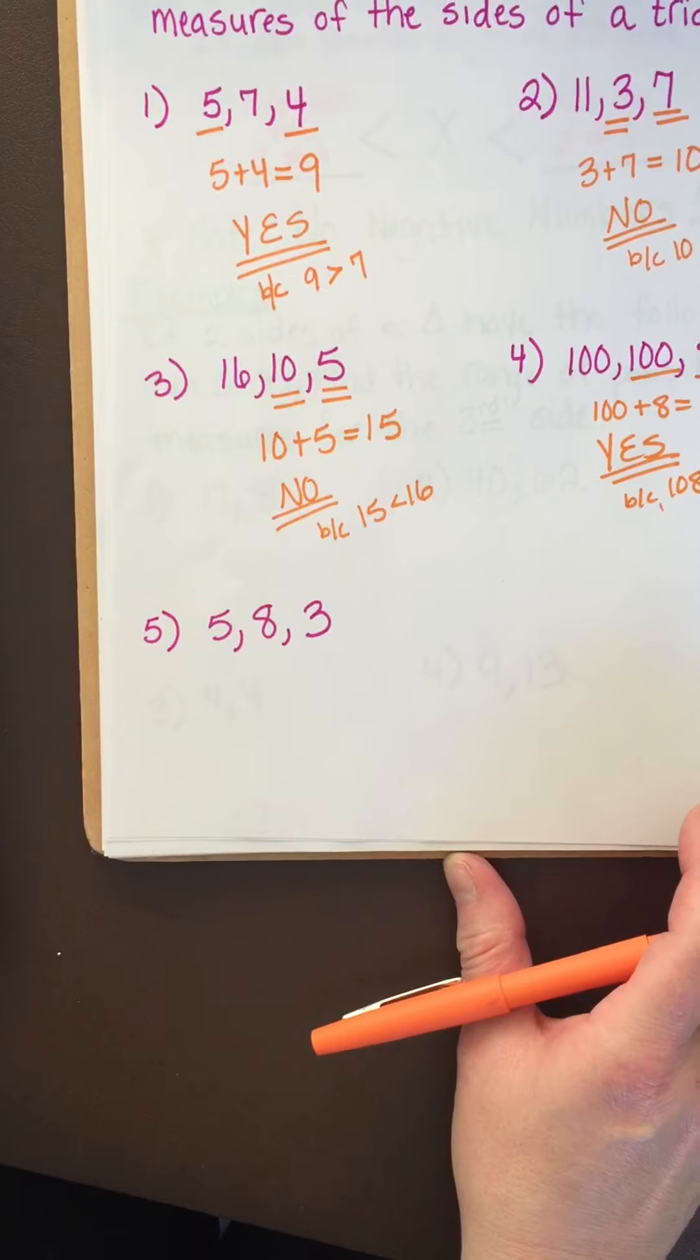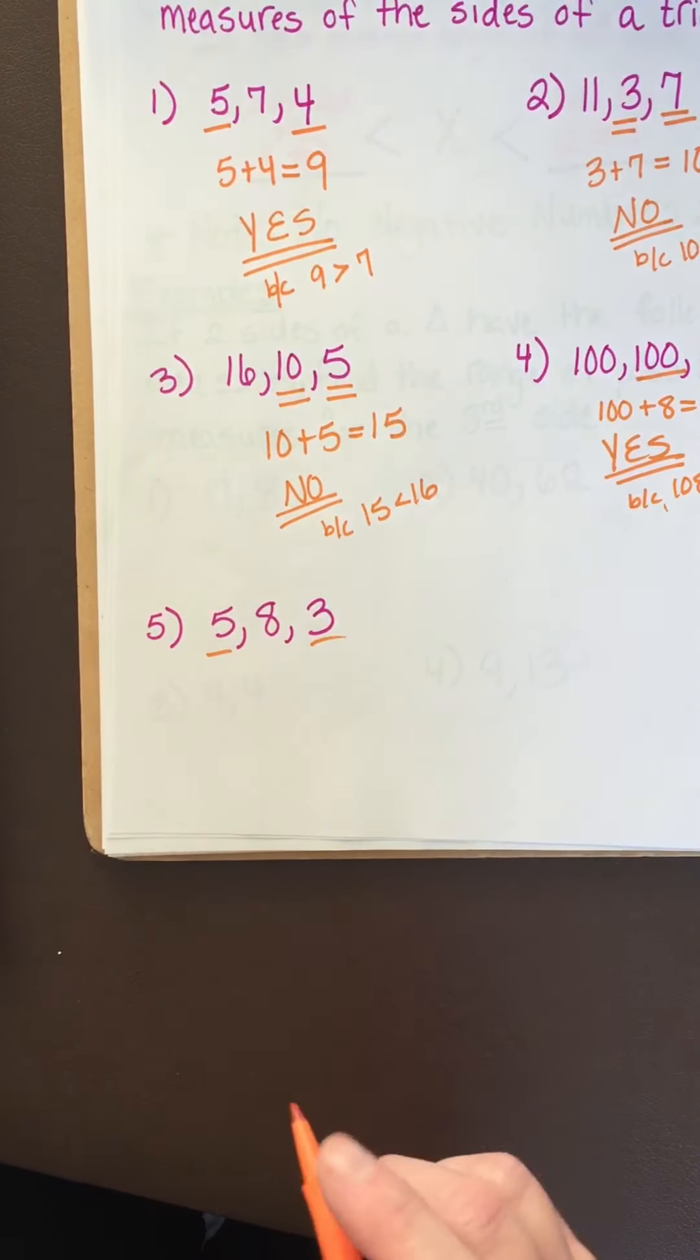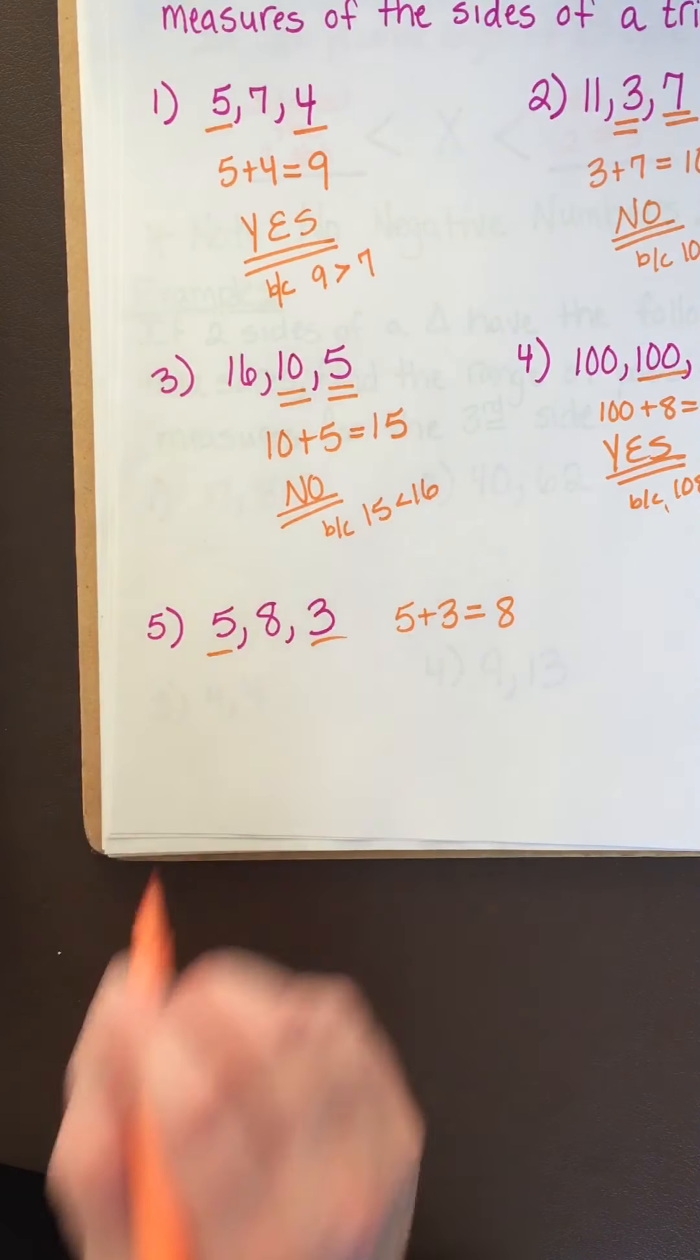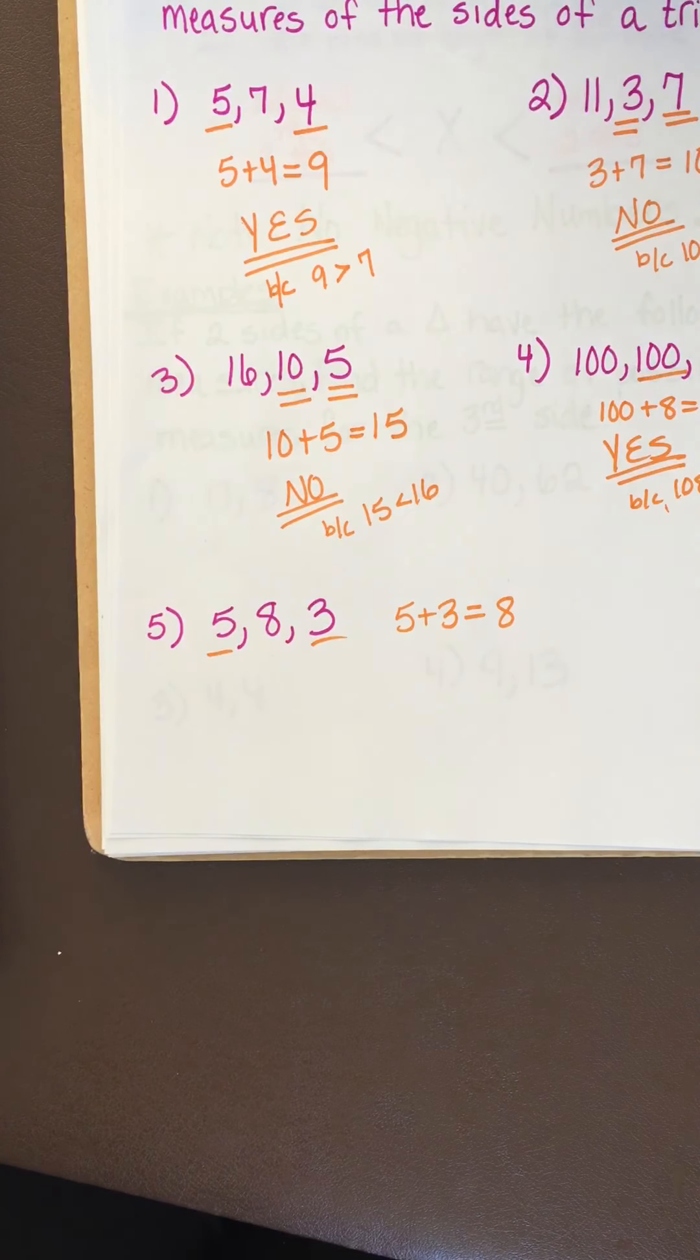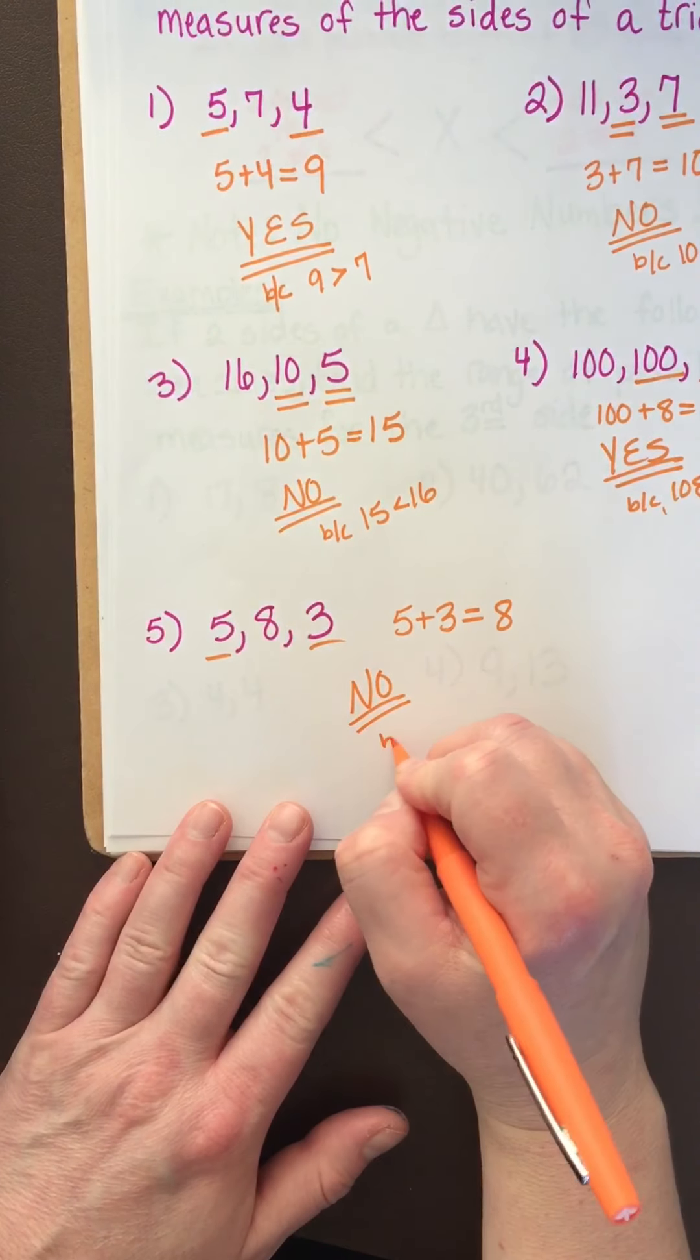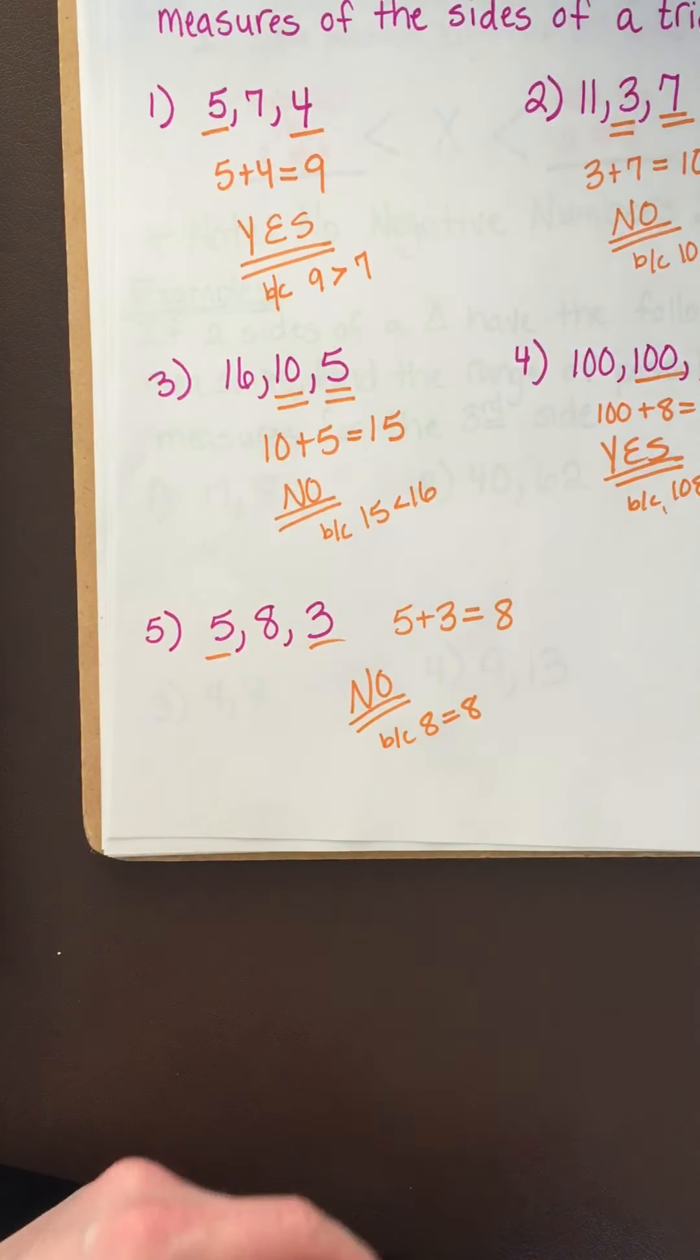And one more of these. We have 5, 8, and 3. The two least numbers are 5 and 3. Adding my boys up, 5 plus 3 is 8. So is 8 greater than 8? No. 8 is not greater than 8. 8 is equal to 8. And remember, we said it can't be equal. It must be greater. So can this be a triangle? No. Because 8 equals 8. It's not greater. See how easy that was?